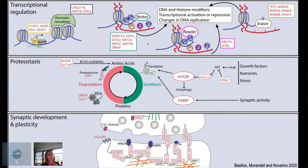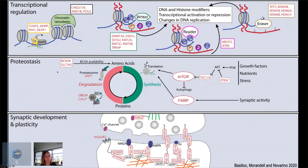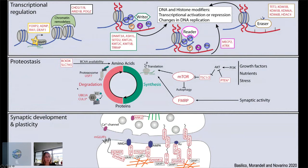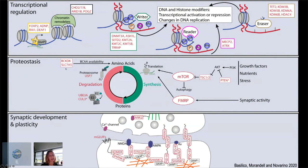For autism spectrum disorders, we know that transcriptional regulators, proteins related to regulation of protein levels, and synaptic development and plasticity encoding genes are very important. Today I would like to give two examples of how studying these disorders helps us understand the brain, focusing on the control of protein levels: one story deals with Cullin-3, an E3 ubiquitin ligase, and the other with SLC7A5, a branched-chain amino acid transporter.